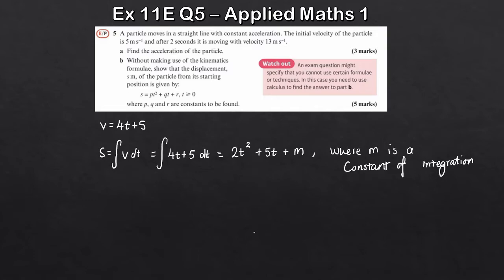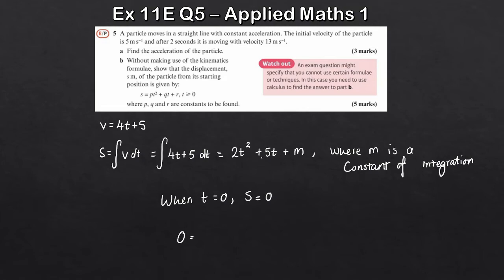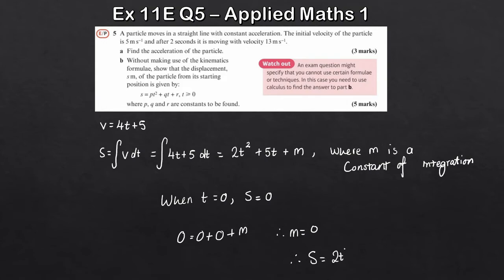We need to find m. We know that when t equals zero, s equals zero — the displacement is zero at the start. Substituting in: 0 equals 2 times 0 squared plus 5 times 0 plus m, so m equals zero. Therefore s equals 2t squared plus 5t. So p equals 2 and q equals 5.